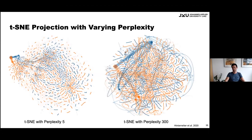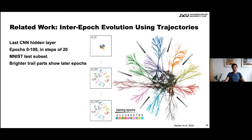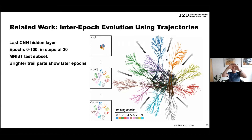Related work from Rauber in Alex Telea's group used a similar idea: projecting states of a neural network trained over multiple epochs, with every instance shown as a trajectory. The epochs move to the outside over time, and you see items nicely spread in the space until eventually they cover it. This shows how generally applicable these trajectory approaches are.